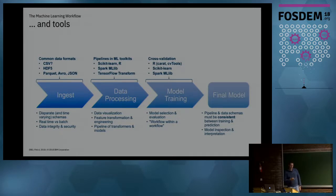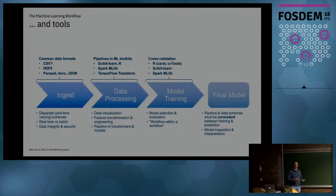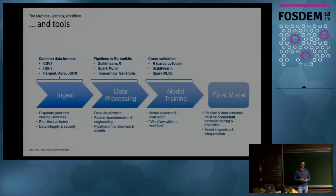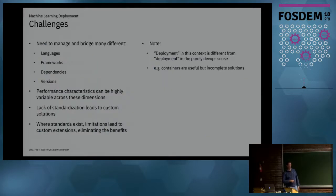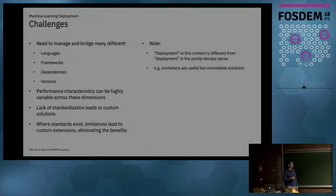It doesn't help if you push a model to production and then the data coming in has a different schema — if a feature changes or disappears, you get garbage in, garbage out. You effectively need to freeze that pipeline and deploy the frozen version to production. You need to bridge and manage all these different gaps between languages, frameworks, their dependencies, and their versions.